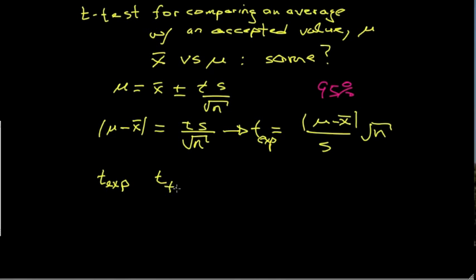We have a table value, or some people call it the critical value of t. If the experimental value is greater than the table value,